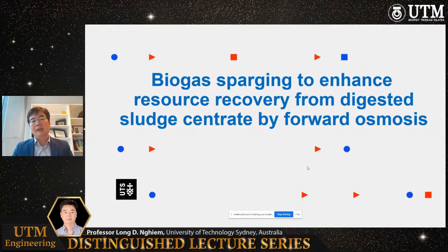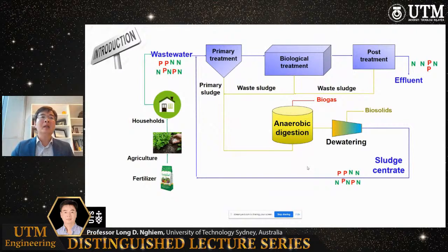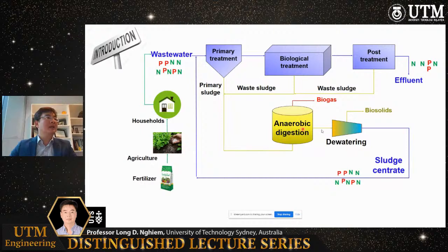I have a very smart PhD student working on nutrient recovery. We have published a few papers, and I'd like to talk about the latest piece of work published a few days ago. In a normal wastewater treatment plant, from primary treatment to biological treatment, sludge goes into an anaerobic digester, then you dewater the sludge. You have the centrate, which goes back to the head of works, and the biosolid goes to land application. The centrate here has very high nutrient content — nutrients being phosphorus and nitrogen, specifically orthophosphate and ammonia.